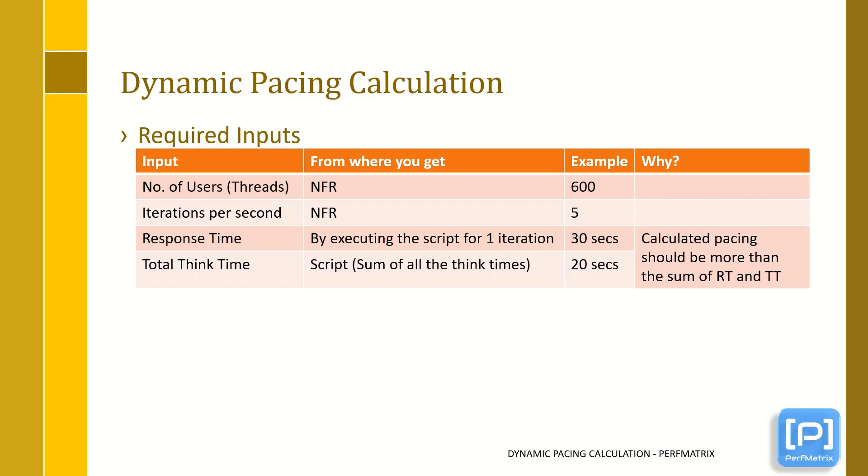This number you can get from NFR. Iterations per second, again this number you can get from NFR. Response time, that is total time taken by an iteration to complete. This time you can get by running the script once without any think time. And the last one is total think time. For that, you can sum up all the think time or delay between iterations which you have used in the script.